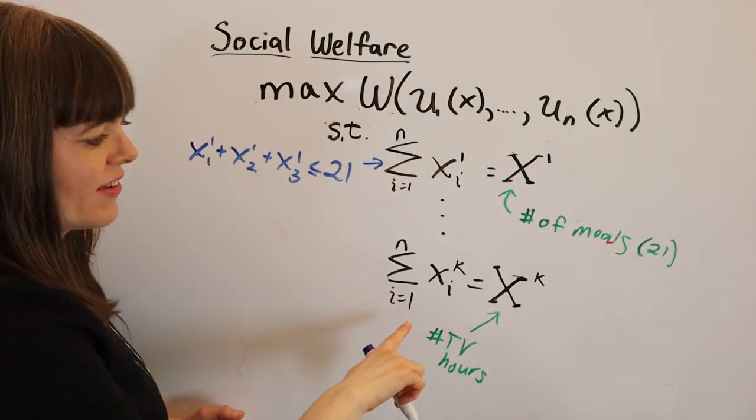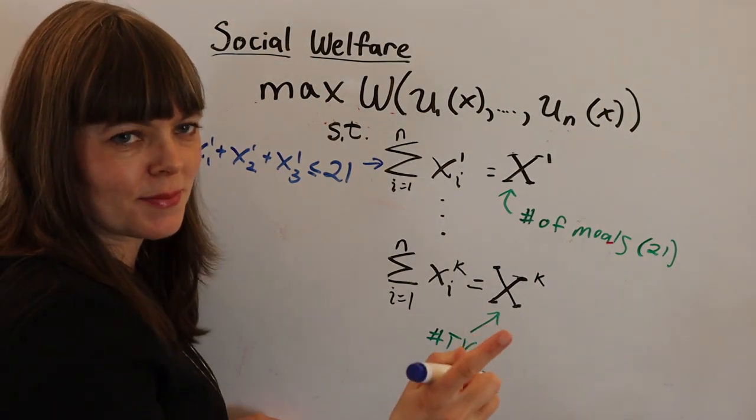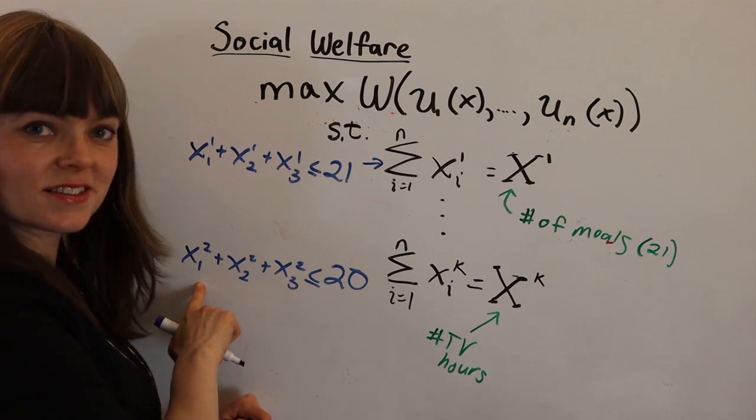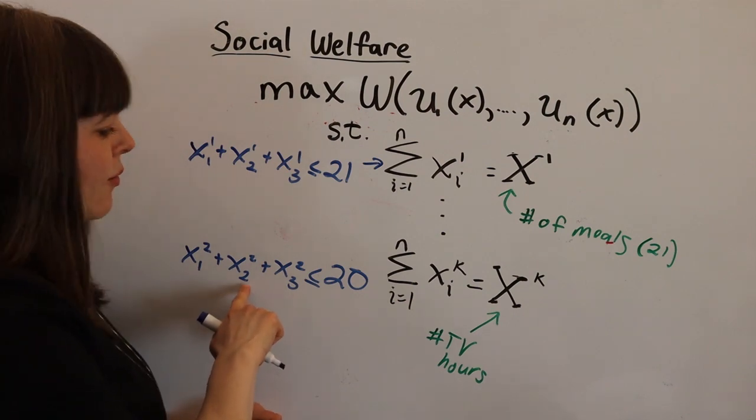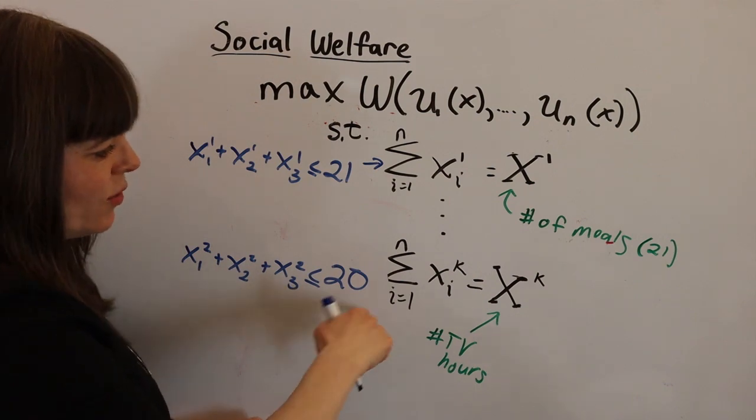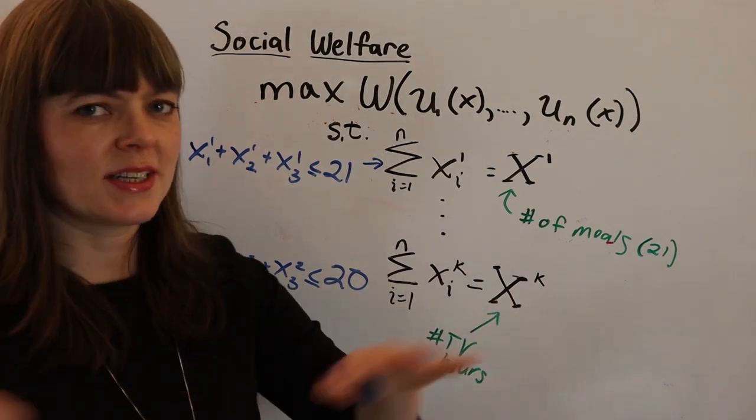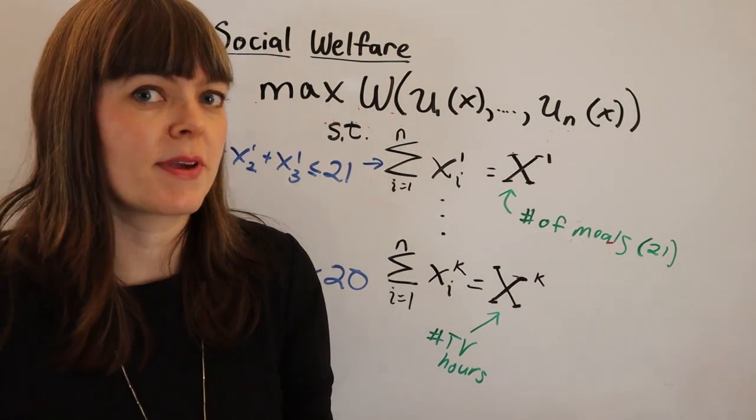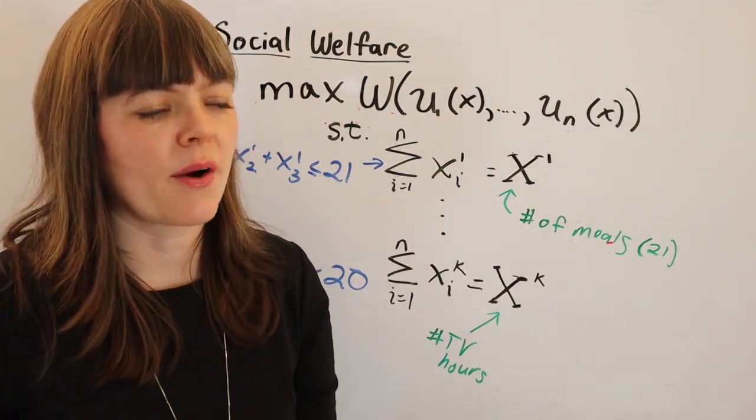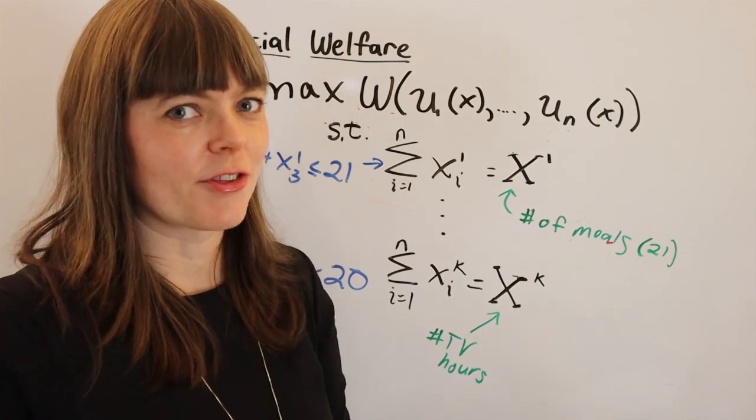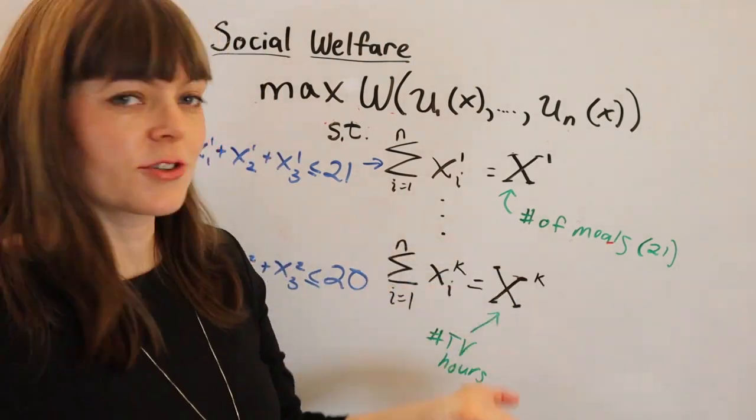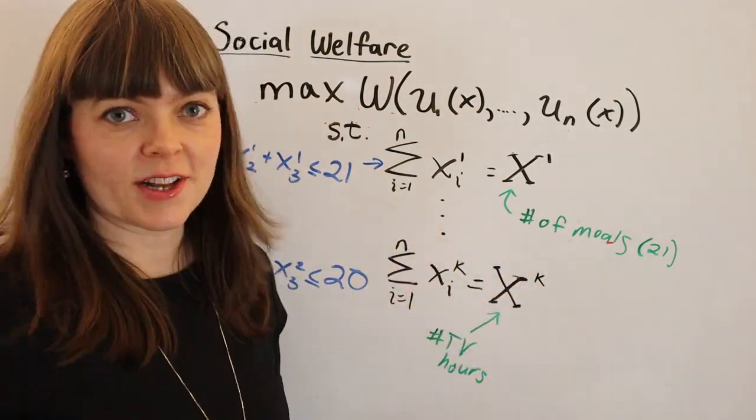And the TV hour constraint is just going to be Talia's TV hours plus Ben's TV hours plus Karen's TV hours has to be less than or equal to 20, which we know is going to be equal because you want to distribute the rights to every meal hour even if one of the roommates can be nice and give their meal hours to someone else if they feel bad for their roommate. So that's an interpretation of this social welfare function with constraints.